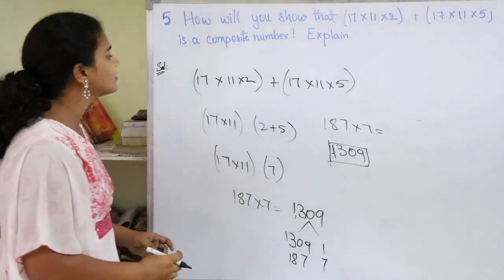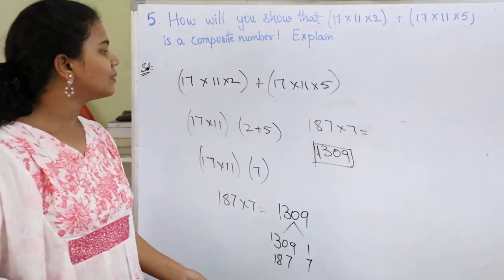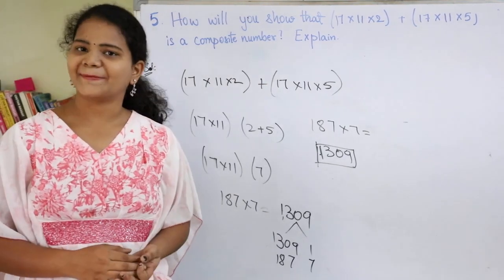So I can conclude that 17 into 11 into 2 plus 17 into 11 into 5 is a composite number. Thank you.